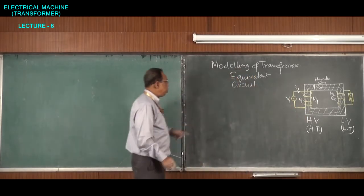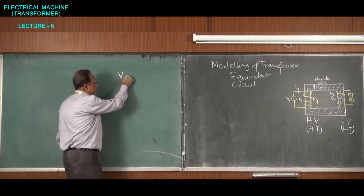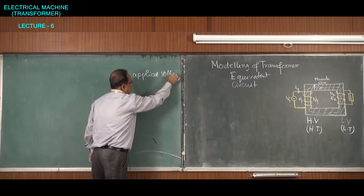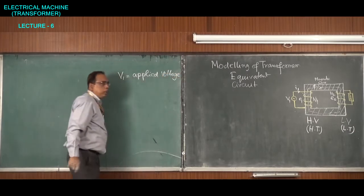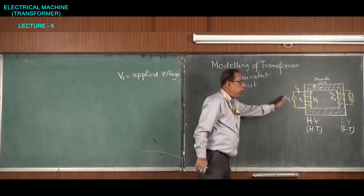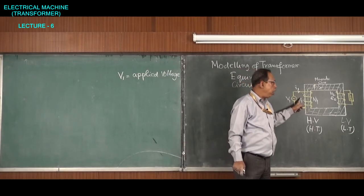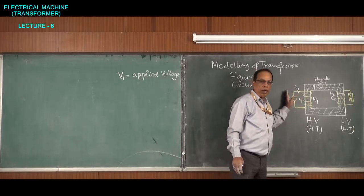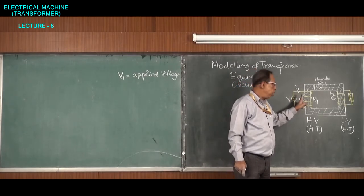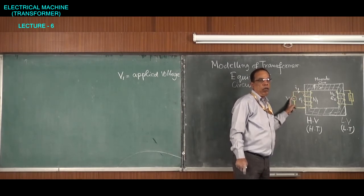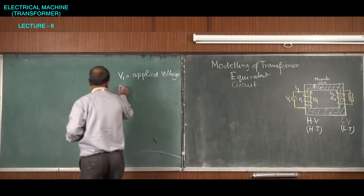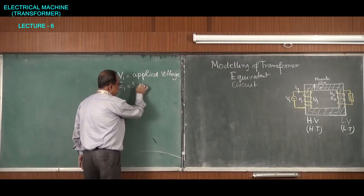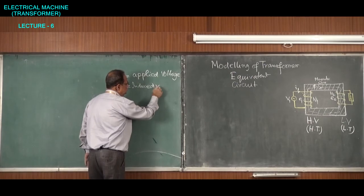The first voltage is the applied voltage V1 on the primary side. There will also be an induced voltage at the primary and an induced voltage at the secondary. The induced voltage in the primary will be counterbalancing the applied voltage, so E1 will be in phase opposition to V1 — that is the induced EMF at the primary.